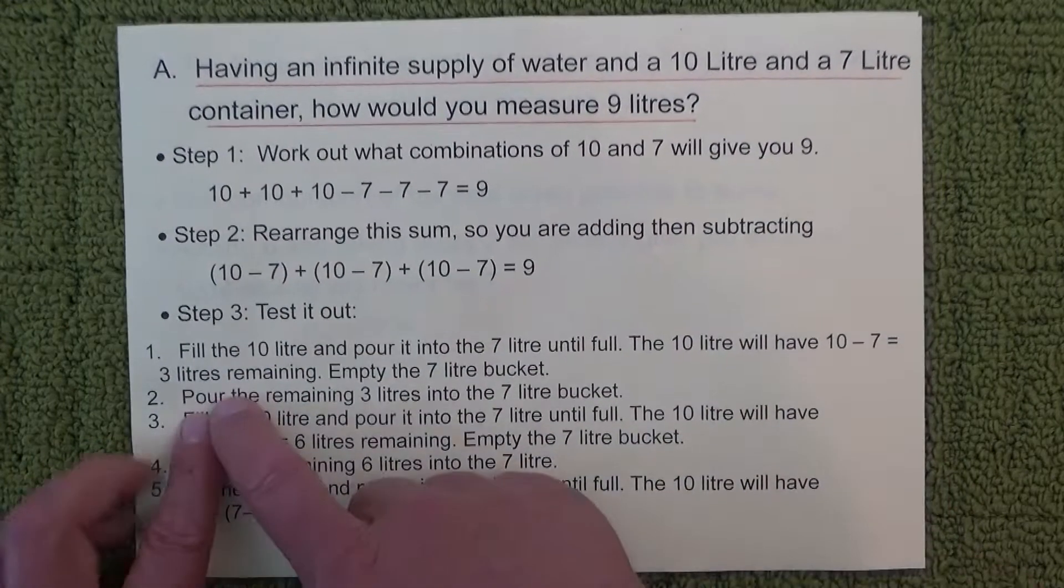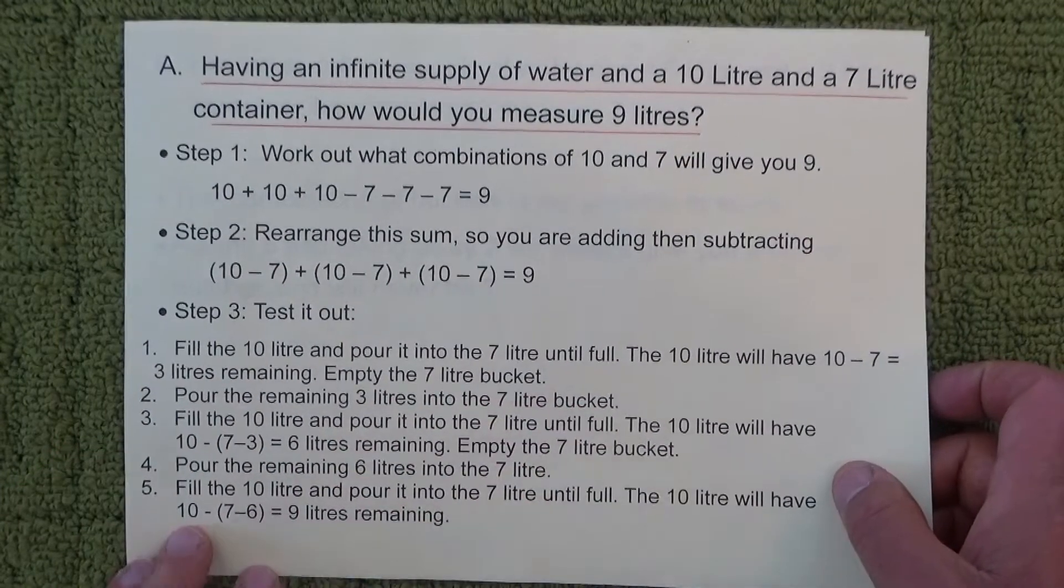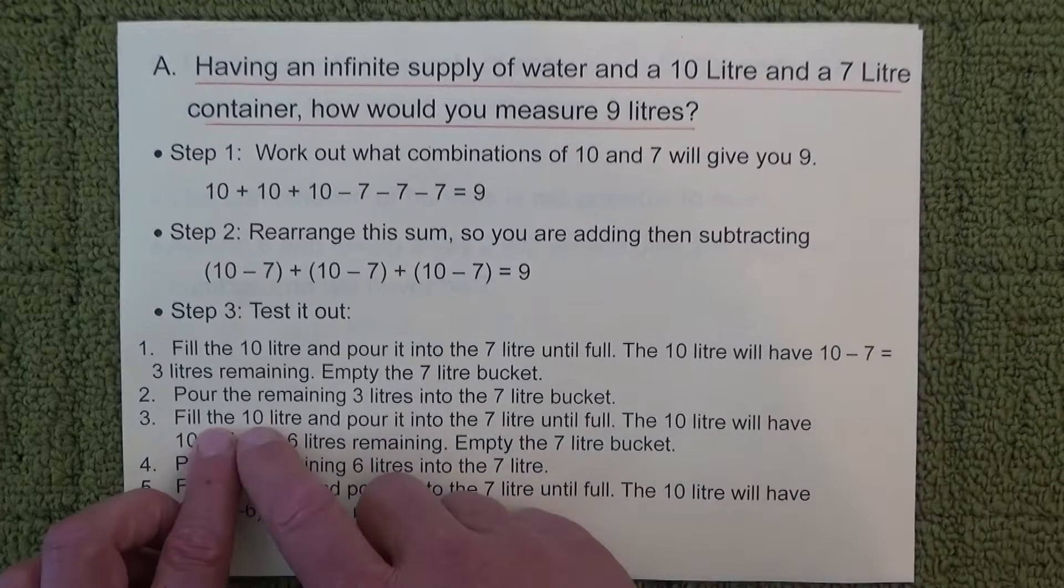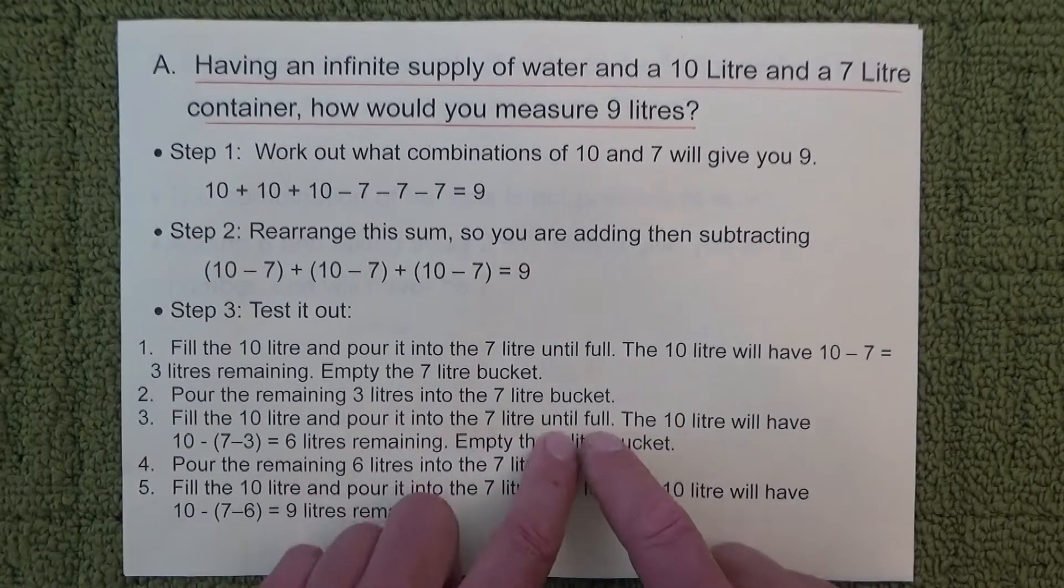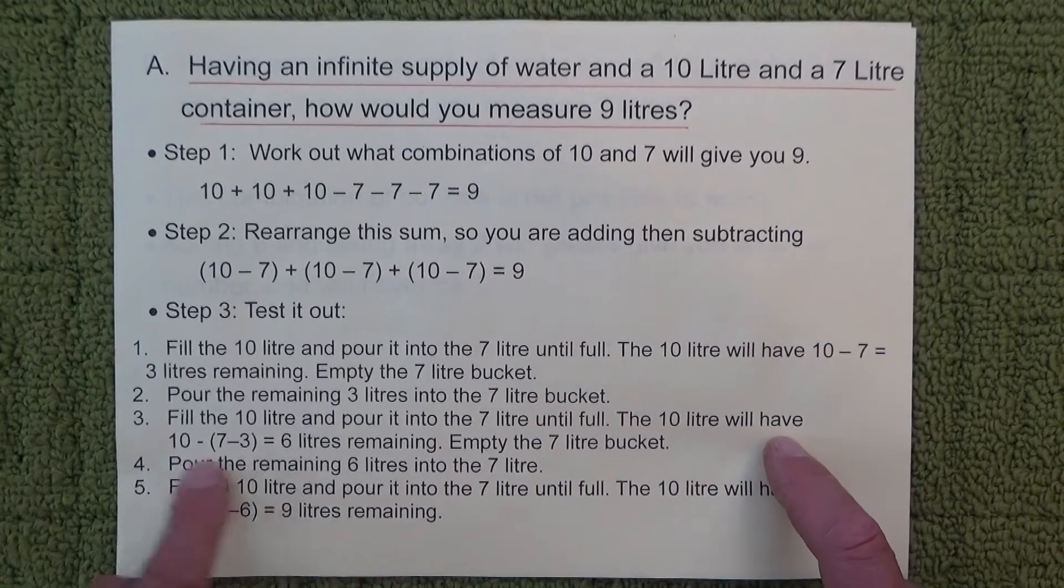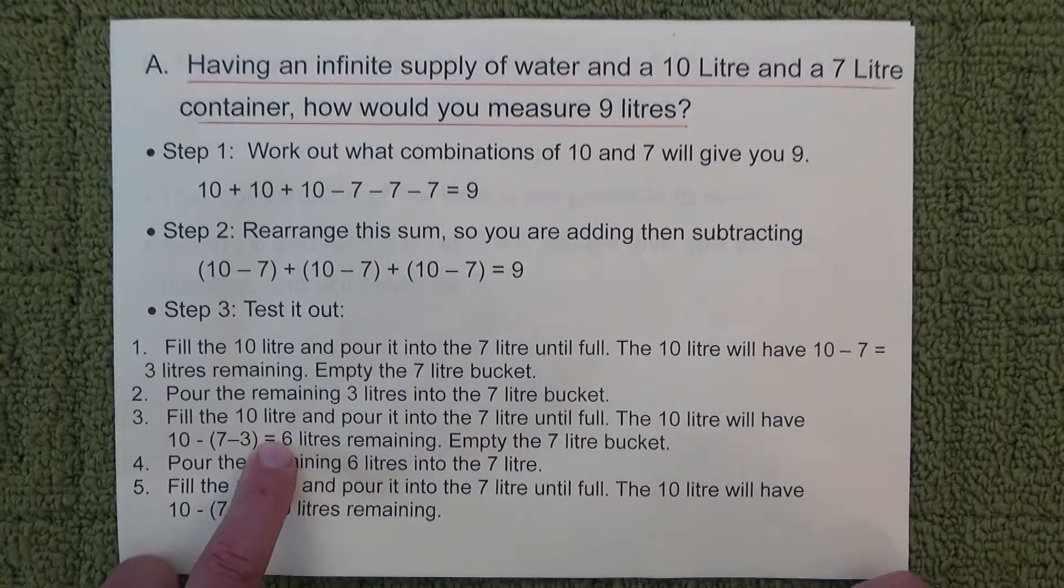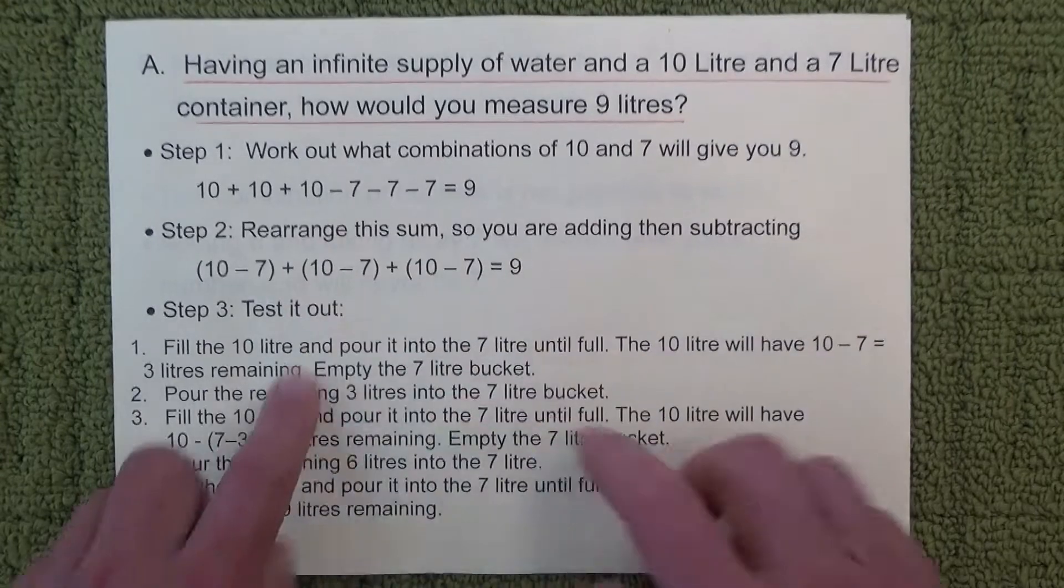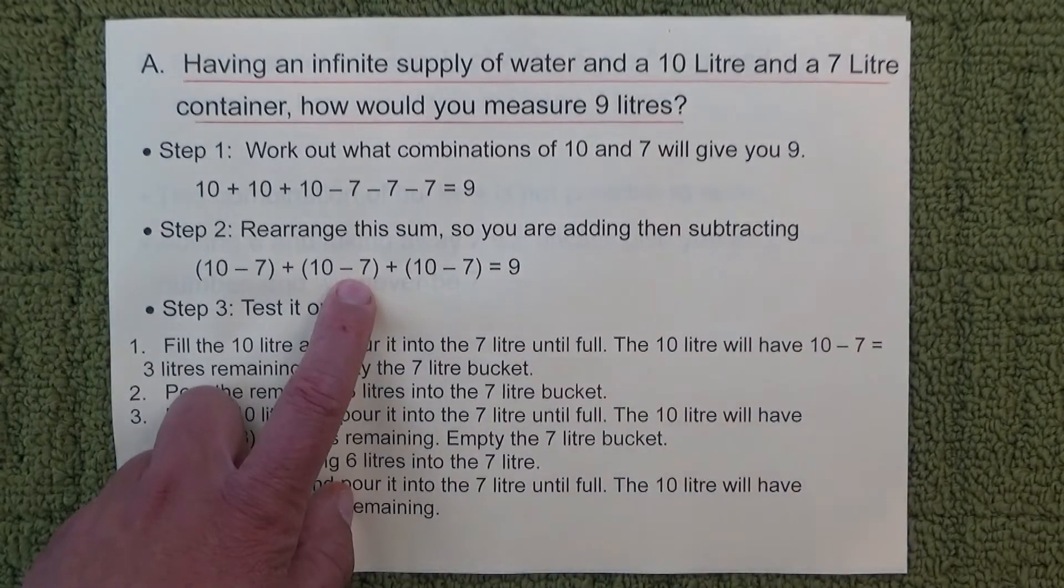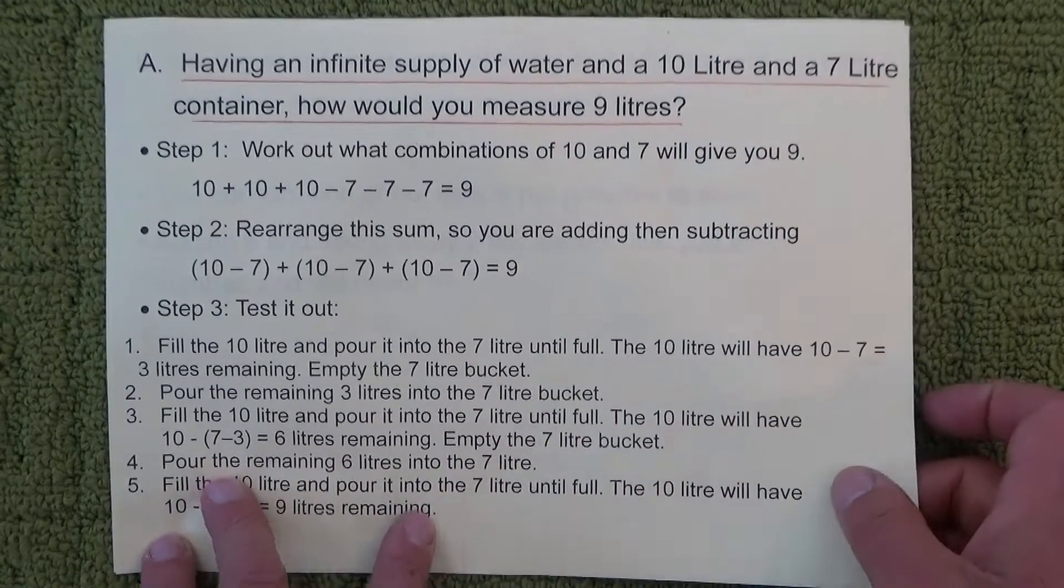And then pour the remaining 3 litres into the 7 litre bucket. Next we fill the 10 litre again and the same process: pour it into the 7 until full. The 10 litre bucket will now have 6 litres remaining, and then we empty out the 7 litre bucket. So that's like the same once again, 10 minus 7. And then pour the 6 remaining litres into the 7 litre container.